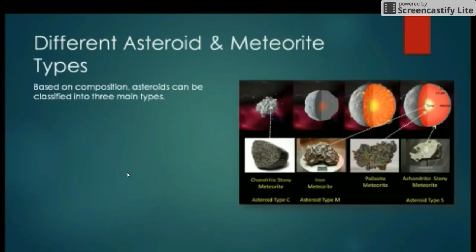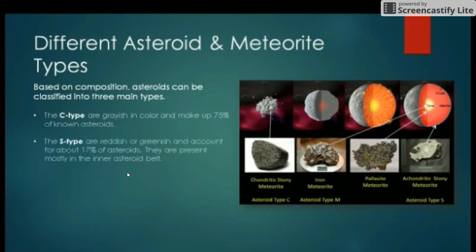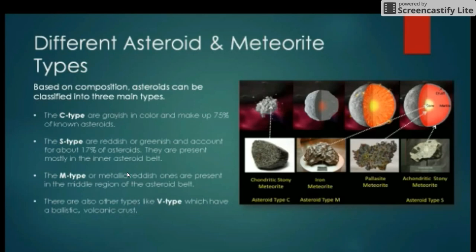Based on composition, asteroids can be classified into three main types. The C type are grayish in color and make up 75% of known asteroids. The S type are reddish or greenish and account for about 17% of asteroids; they are present mostly in the inner asteroid belt. The M type, or metallic reddish ones, are present in the middle region of the asteroid belt. There are also other types, like V type, which have a basaltic volcanic crust.